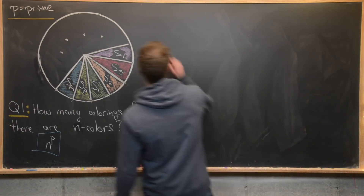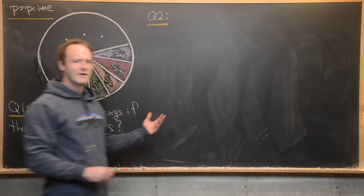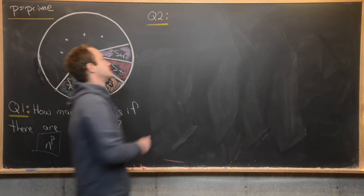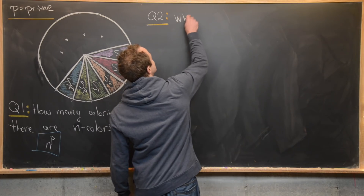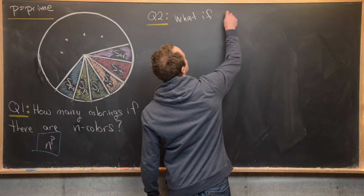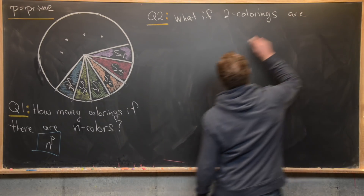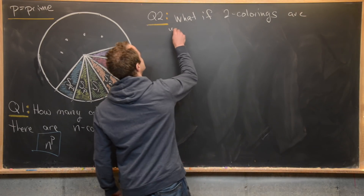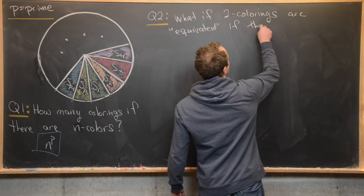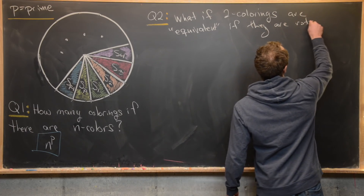The second question adds some sort of equivalence into two colorings. What if two colorings are considered equivalent — I'll put that in quotes — if they are rotations of each other?